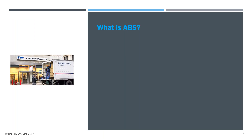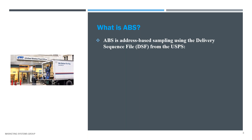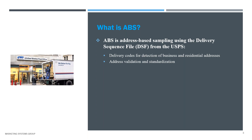What is ABS? ABS is address-based sampling, specifically using the delivery sequence file from the postal service. This is a database of mail delivery with all kinds of information about the delivery points. Most notably, we can differentiate between business and residential delivery points, as well as address validation and standardizations that enhance the delivery process.